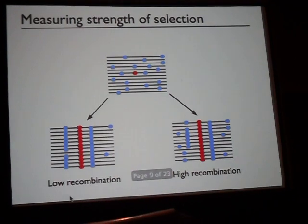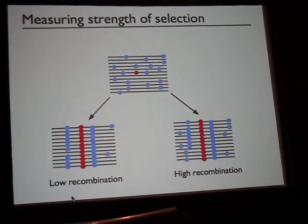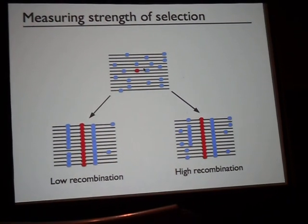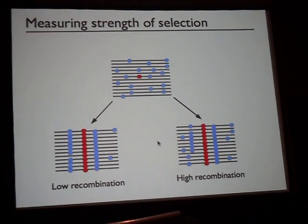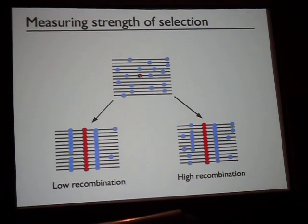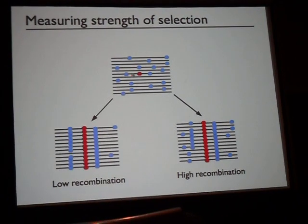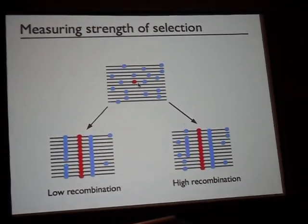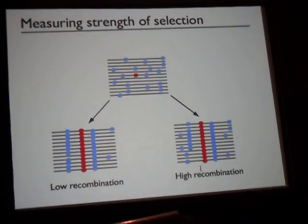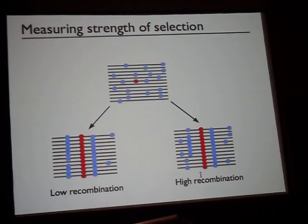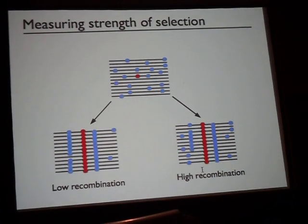How might we measure selection? This is why I'm in the recombination session. We take advantage of the fact that the impact of selection on linked diversity depends on recombination. In a hitchhiking scenario, the red circle is the beneficial mutation being fixed, and lead circles are the linked neutral alleles. For a neutral allele to persist, it has to recombine onto the chromosome carrying the beneficial mutation. In regions of low recombination that occurs rarely, so more variation is lost; in regions of high recombination it occurs more frequently, so less variation is lost. This predicts a correlation between recombination rate and neutral diversity, and the stronger that correlation is, the larger we can infer the impact of selection on the genome was.